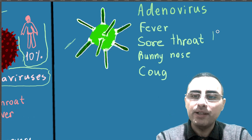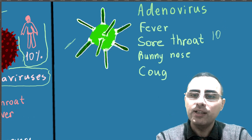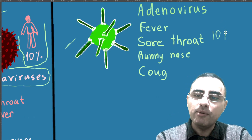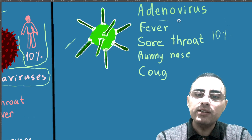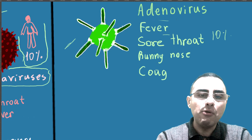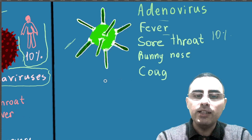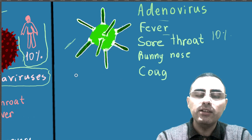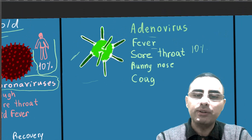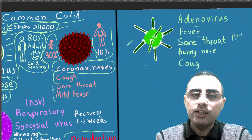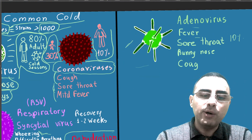The fourth virus is adenovirus. Adenovirus is also common among children and adults, accounting for around 10% of cases or less among adults. It causes fever, sore throat, runny nose, and cough, and it also resolves without treatment in about one week.